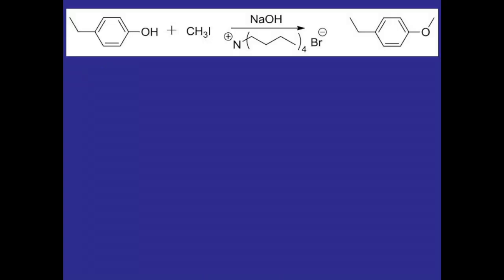Here's the reaction that we'll be doing. We'll be taking 4-ethylphenol and reacting it with methyl iodide in an SN2 mechanism to form the ether product. This product is also known as anise, which is used in licorice flavoring. So as the product forms throughout the reaction, it'll smell something like black licorice.